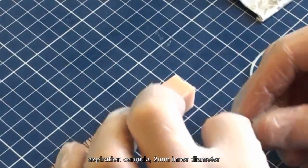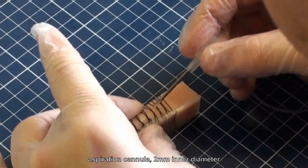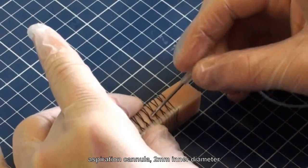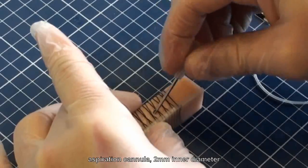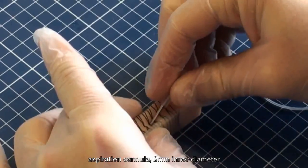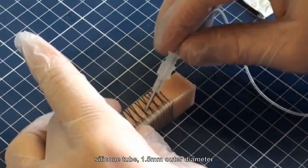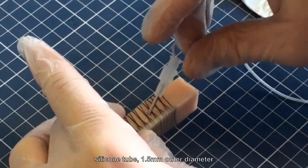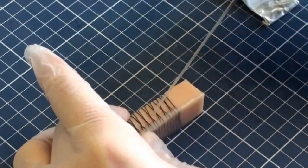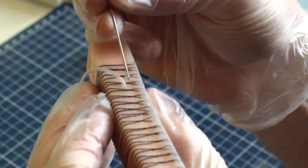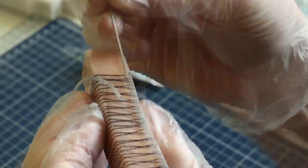We do this by taking an aspiration cannula, which is a very thick needle, and penetrate the wall of the actuator. Then, we feed a small silicone pipe through the cannula and retract the cannula. Finally, we seal the cut with some glue.